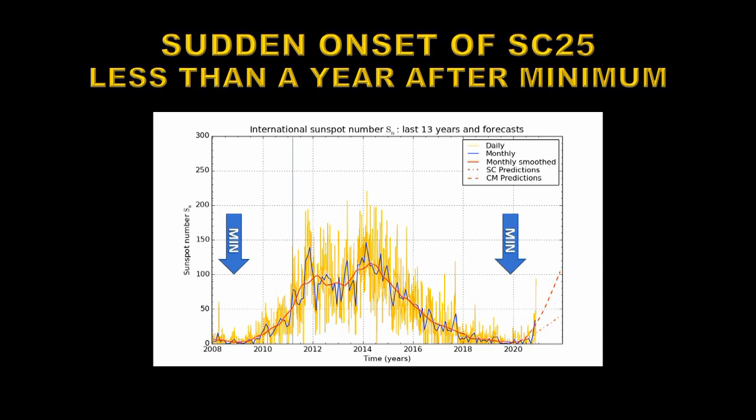One of the rules of thumb of solar physics is that a normal length between cycles is usually followed by an average cycle. If you have a short cycle, then you have a larger cycle. If you have a longer delay between the two minima, then you have a smaller cycle. And that certainly worked out last time. So this would by itself forecast that we'd have a maximum of something like about 150, which is the average sunspot number at the peak of a cycle.